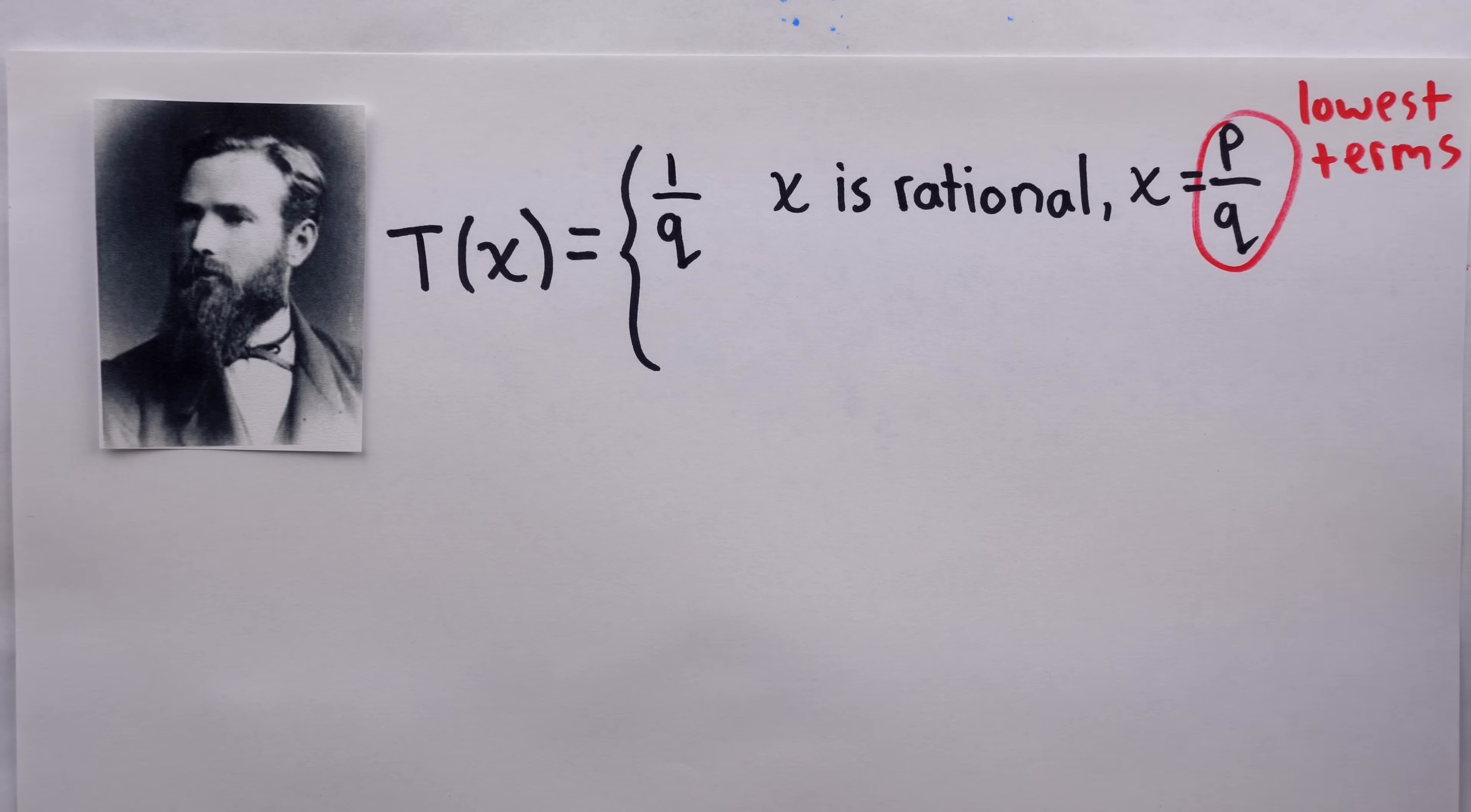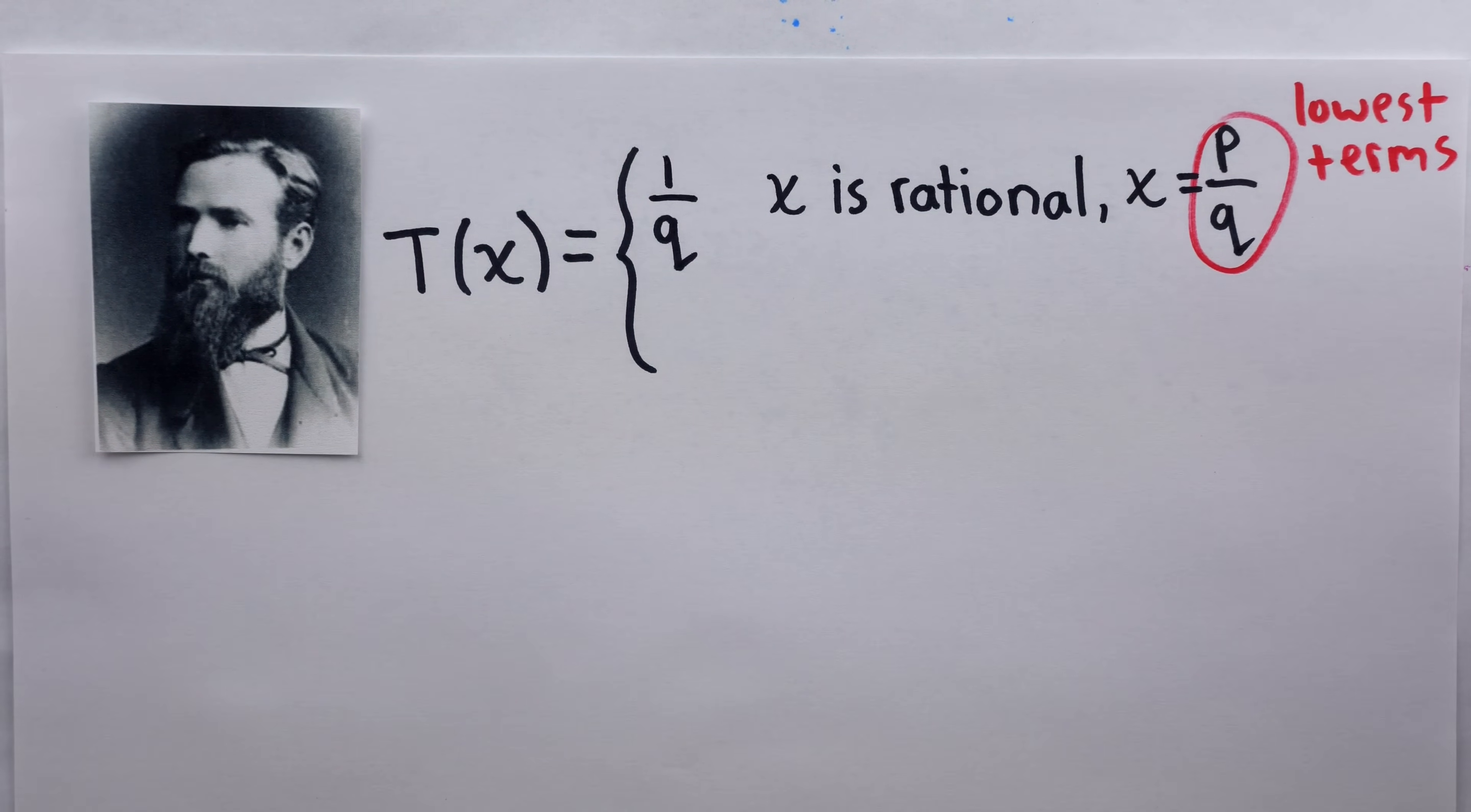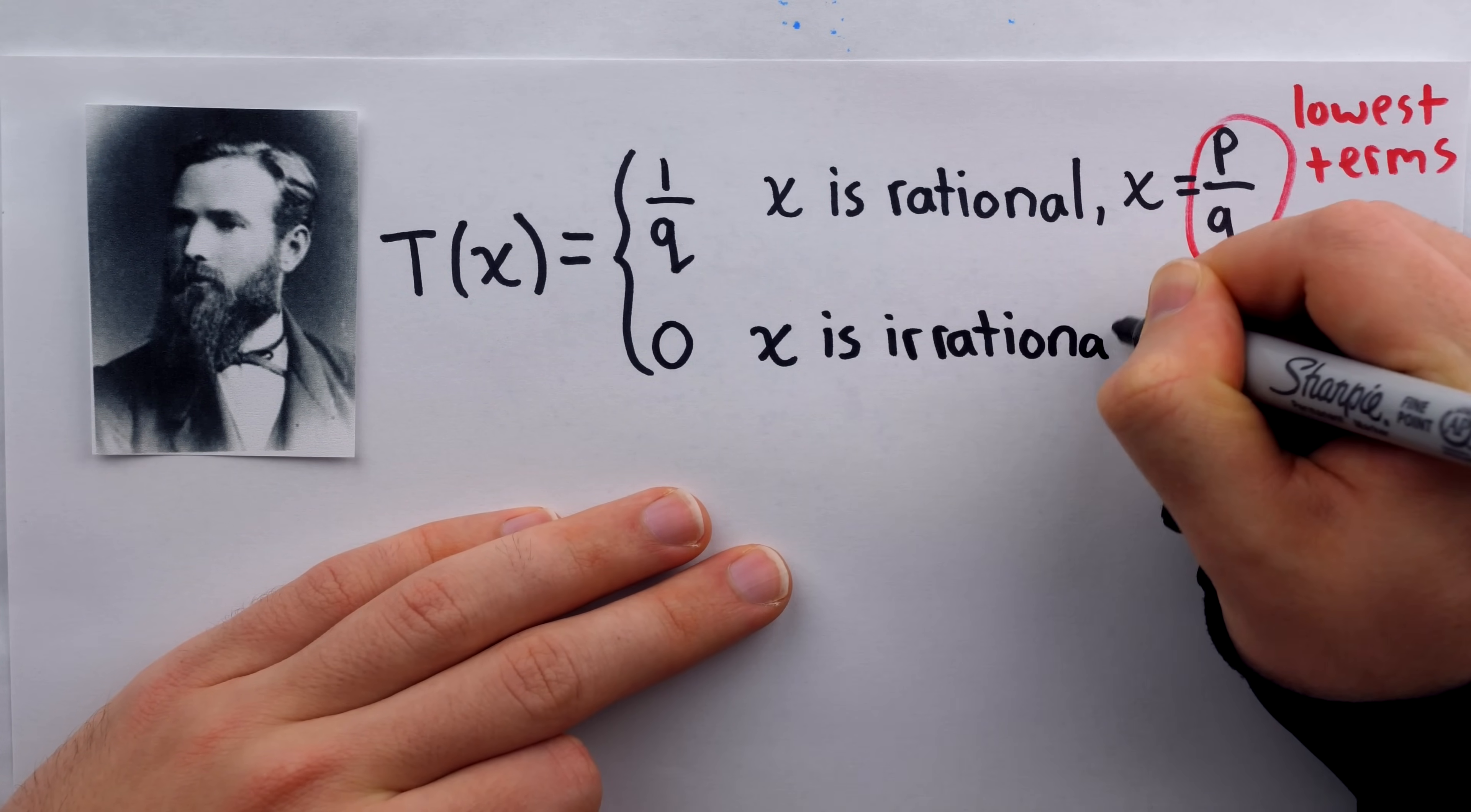If we plugged in five-tenths, the output would be one over two, because five-tenths has two as the denominator when it's fully reduced to one-half. The rest of the function is simple, it outputs zero if x is not rational. So if x is irrational, like pi, you plug that in, Tomé's function outputs zero.